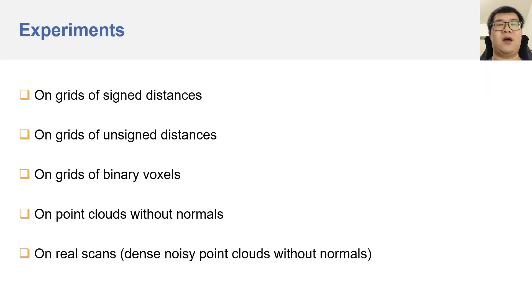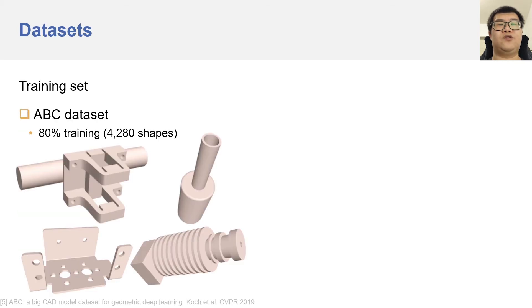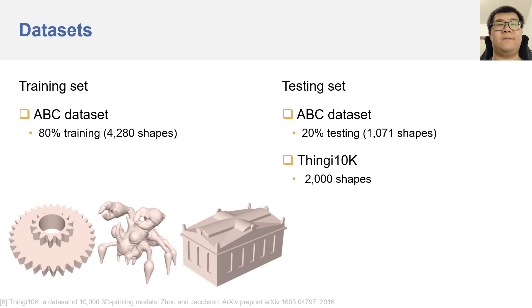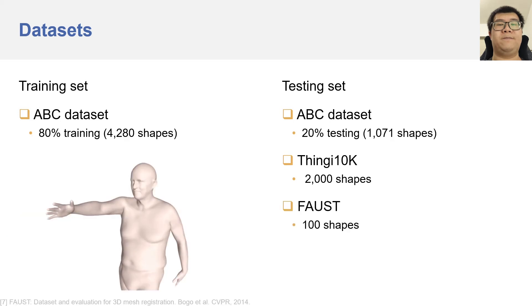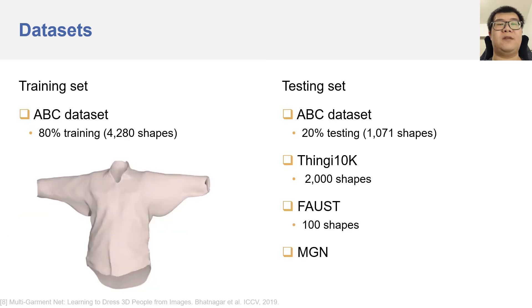In our experiments, we compare our method and various other methods on reconstructing meshes from grids of signed distances, grids of unsigned distances, grids of binary voxels, point clouds without normals, and real scans, which are dense, noisy point clouds without normals. We train our method on the training split of the ABC dataset, and test on ABC, ShapeNet10K, Famous, MGN, and Matterport3D.